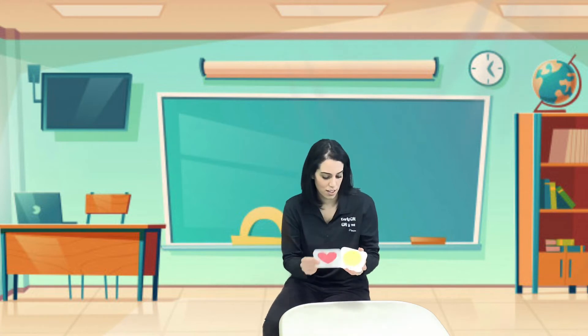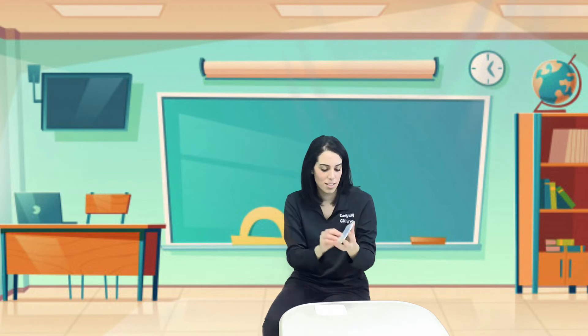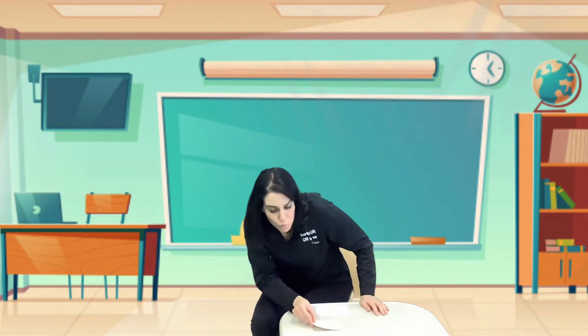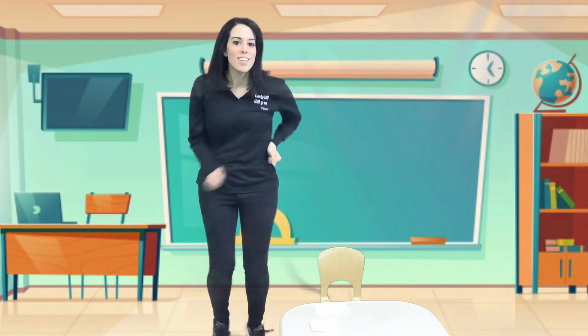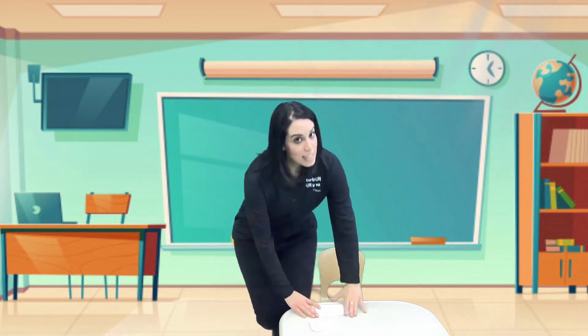Heart, circle, oval. Oh, there's the running man. Let's run. One, two, three, four, five. Okay, let's keep playing.